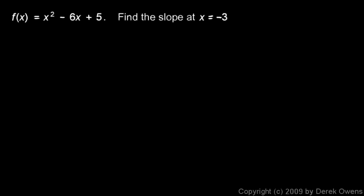And here's one more example. F of x is x squared minus 6x plus 5. Find the slope of this curve at x equals negative 3. So we'll find the limit as x approaches negative 3 of f of x minus f of negative 3 over x minus negative 3.